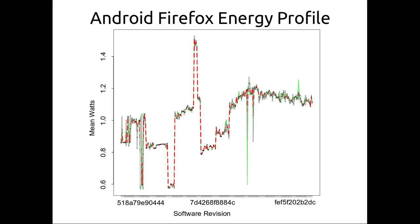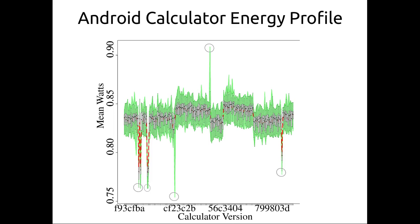The power profile of Firefox shows quite a bit of variation over time, definitely above one watt for the later versions. Calculator is different — it has basically five distinct regions of performance, with power performance usually above 0.8 watts and typically less than 0.85 watts.